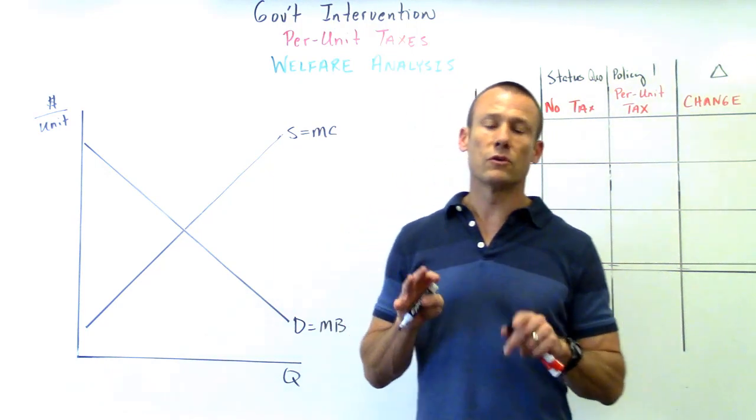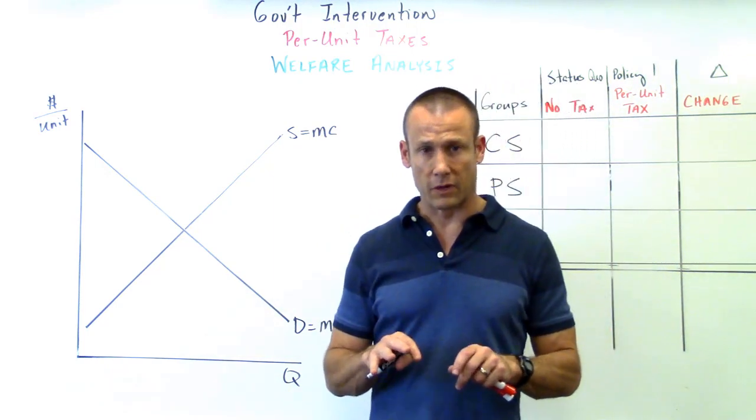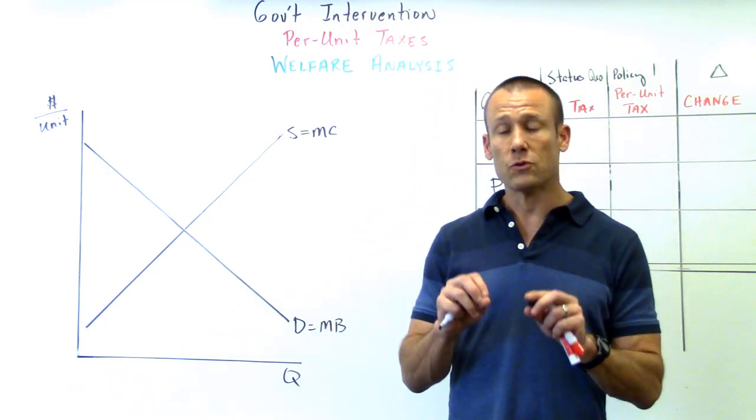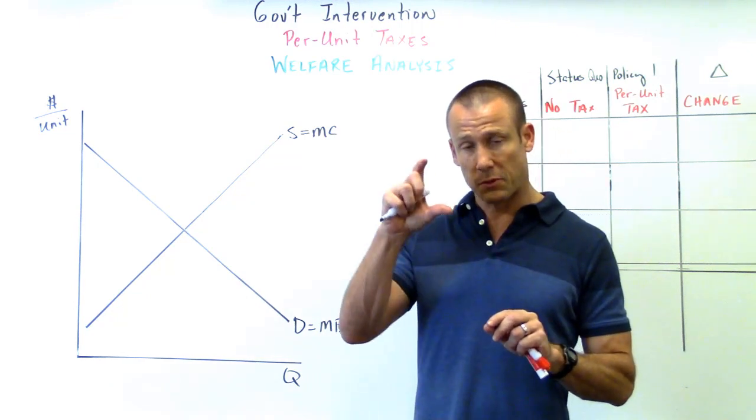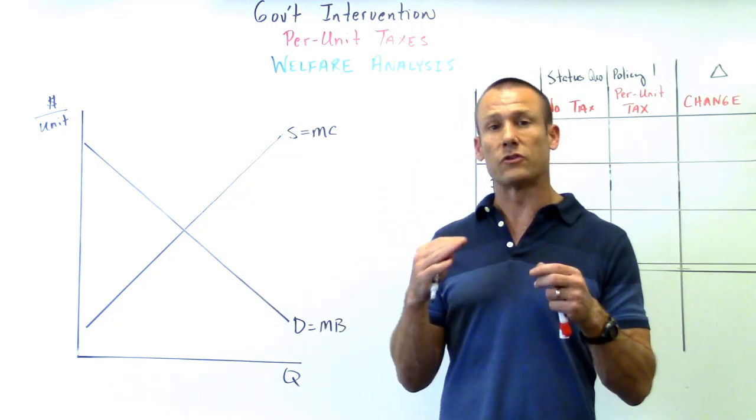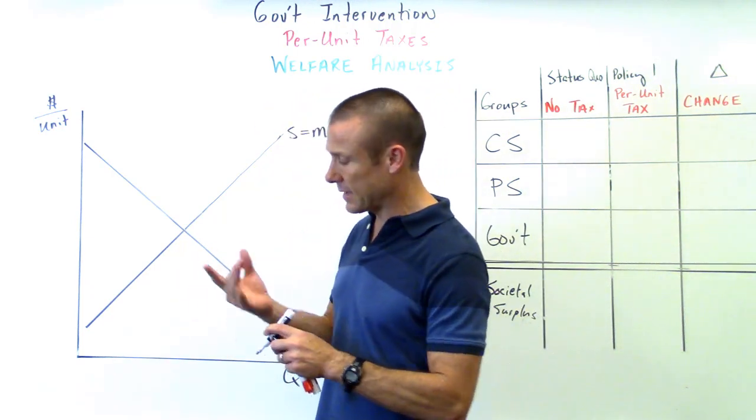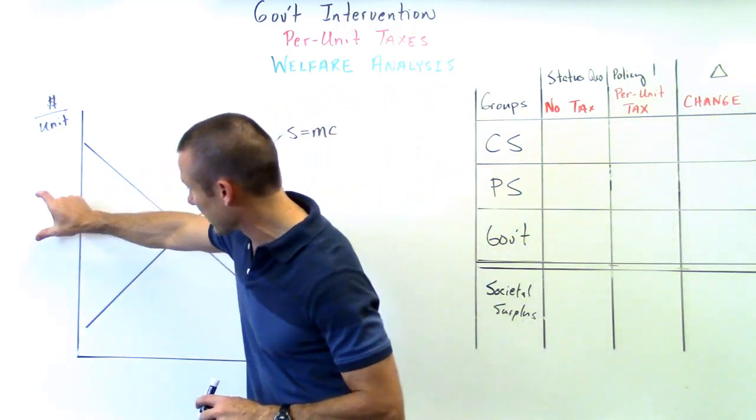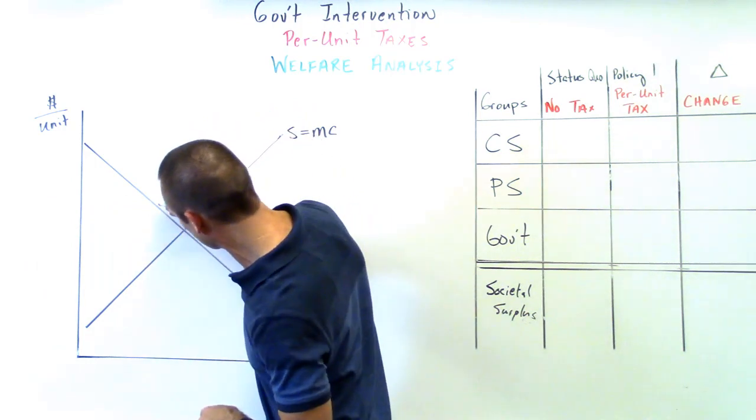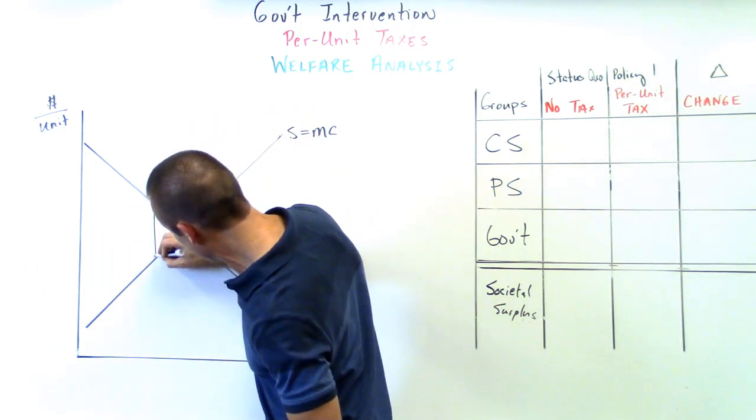Over to the graph, I'm going to use the tax wedge to do this. If you just shifted the supply curve based on the per-unit tax you get the same result, it'd just be a little messier. I'm going to say the per-unit tax is about that much.